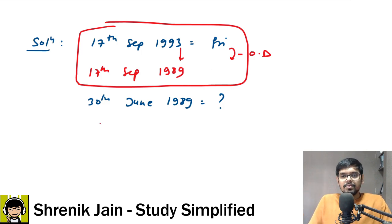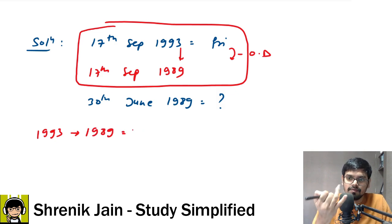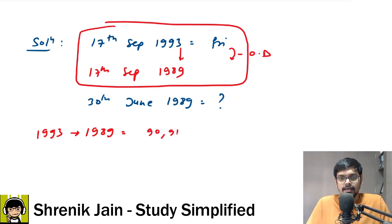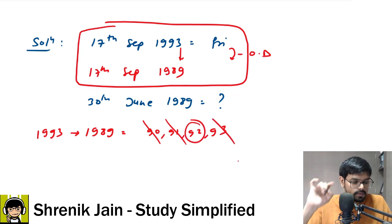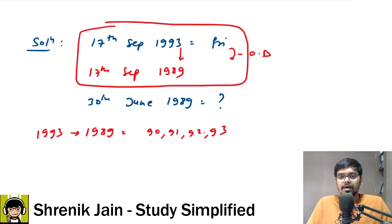Tell me, from 1993 to 1989 how many years are there? Manually you can count: we have to go from 1989, so 90, 91, 92, and 93 - four years. Among these four years, who is the leap year? 90 is not divisible by four, 91 is not, 92 is divisible by four, 93 is not. So only one leap year.